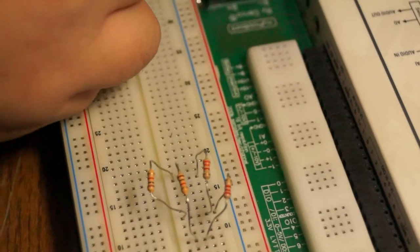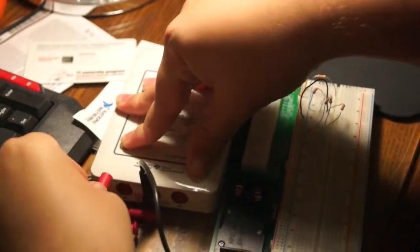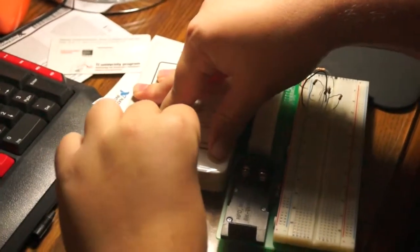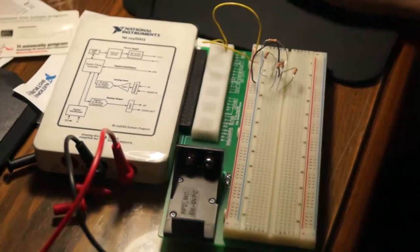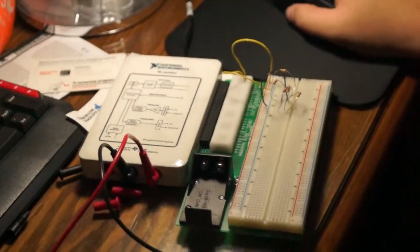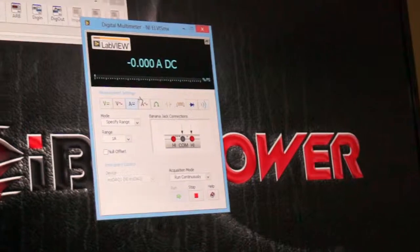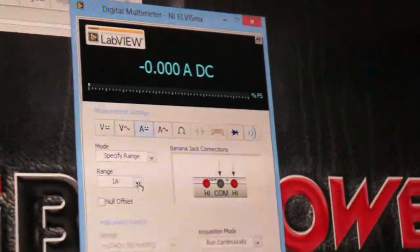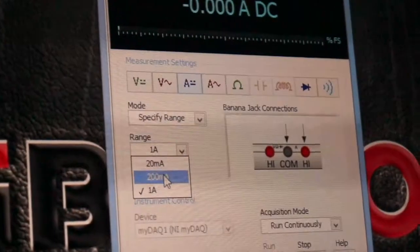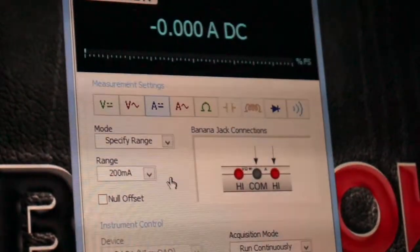Now in order to measure current, you must first take the red cord out of the left port and put it into the right port. Also on screen, you need to change the measurement to amps and then change the range to about 200 milliamps.